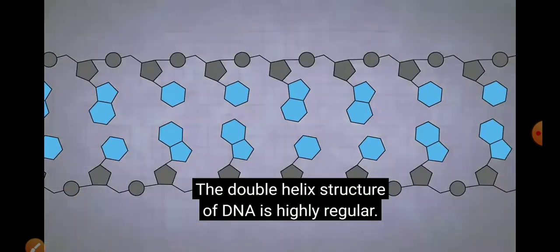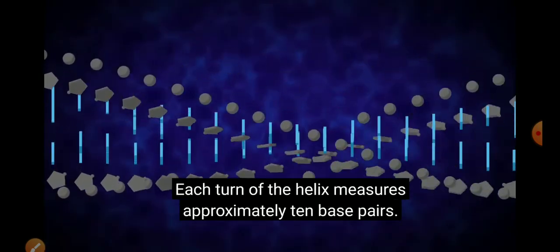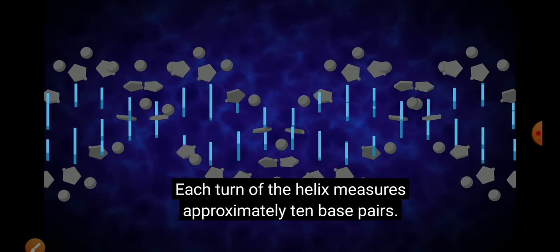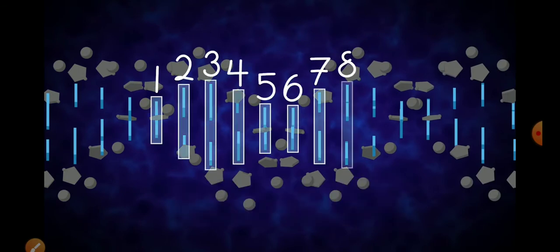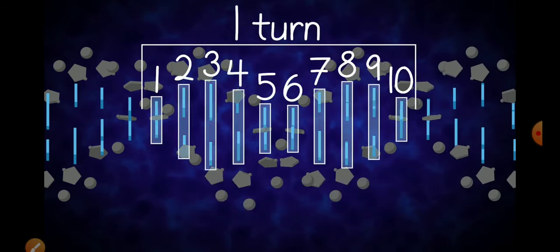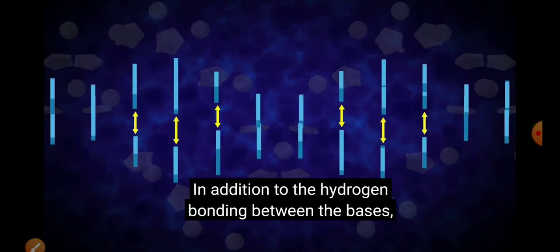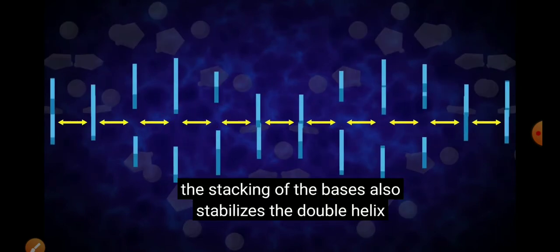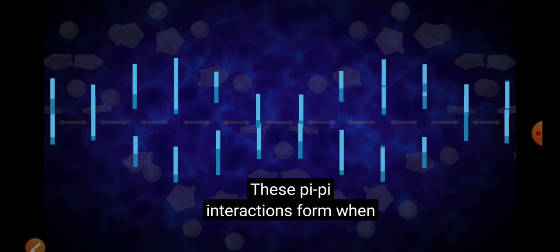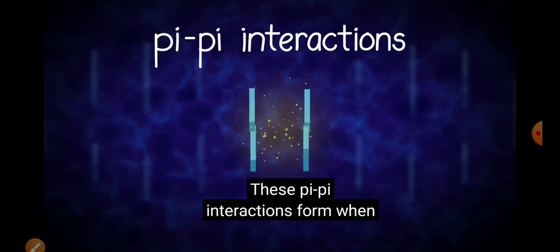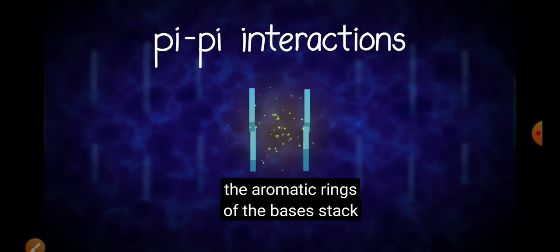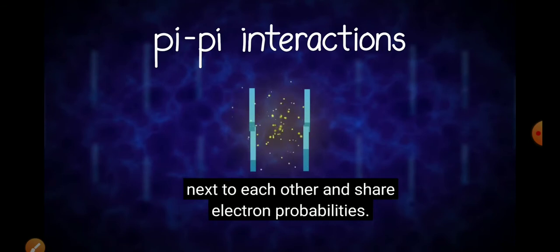The double helix structure of DNA is highly regular. Each turn of the helix measures approximately ten base pairs. In addition to the hydrogen bonding between the bases, the stacking of the bases also stabilizes the double helix structure. These pi-pi interactions form when the aromatic rings of the bases stack next to each other and share electron probabilities.